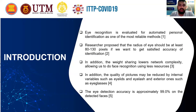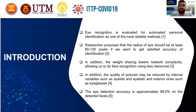For the introduction: eye recognition is evaluated for automated person identification as one of the most reliable methods. Researchers proposed that the radius of the eye should be at least 80 to 130 pixels to get satisfactory accuracy of identification. In addition, weight sharing lowers network complexity, allowing face recognition using fewer resources. Also, the quality of pictures or images may be reduced by internal variables such as eyelashes and eyelids, and exterior ones such as eyeglasses. Finally, the eye detection accuracy is approximately 99.0% on the detected faces.